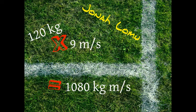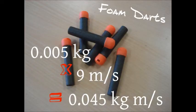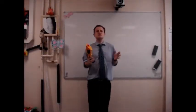Multiply them together will tell us exactly how much momentum it has. So, Jonah Lomu would have 1,080 kilogram meters per second of momentum, but foam darts, only 0.045 kilogram meters per second.